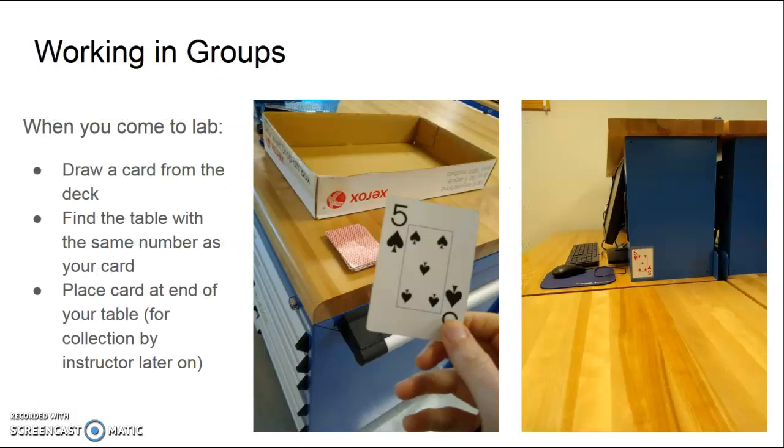As I mentioned you'll be working in groups. We will split you randomly into groups of three each lab and we do this by having you draw numbers from a deck of cards. So when you come to lab in the central island there will be a deck of cards. Here we have shown someone getting the number five so that means you would look for the table that also has the number five on it and that'll be your workstation for the day. It's very useful if you can place your card at the end of your table so that the instructor can collect it easily when everyone has arrived.